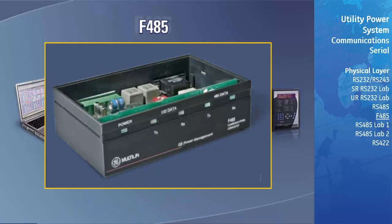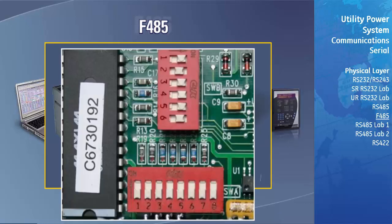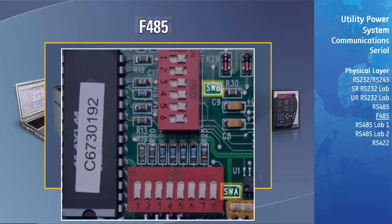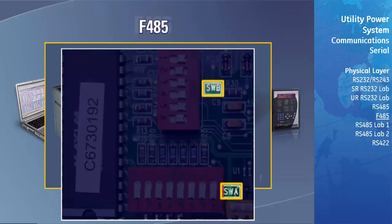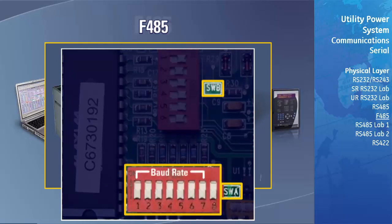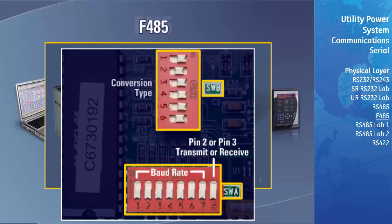The converter box is configured via two internal DIP switch banks, accessible by removing the cover of the converter. The designator for each switch is clearly marked on the printed circuit board. Switches A1 through A7 are used to set the baud rate. Switch A8 determines if pin 2 or pin 3 is the transmit or receive data line. Switches B1 through B6 are used to select the conversion type.